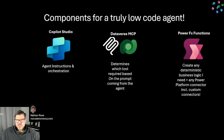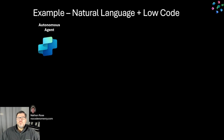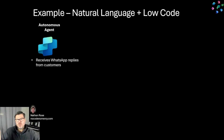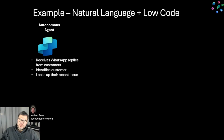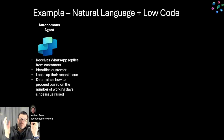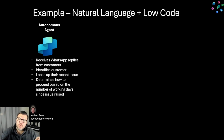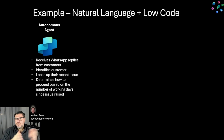Let's get into a specific example. We've got an autonomous agent that is going to receive WhatsApp replies from customers. We send WhatsApp messages to our customers and they reply back to us. When the agent gets a reply, it needs to identify the customer, then based on that customer find their most recent issue — let's assume we have a Dataverse table called issue. Then based on the number of working days between when that issue was created and right now, it determines what to do: 10 working days or less goes down pathway one, more than 10 goes down pathway two.